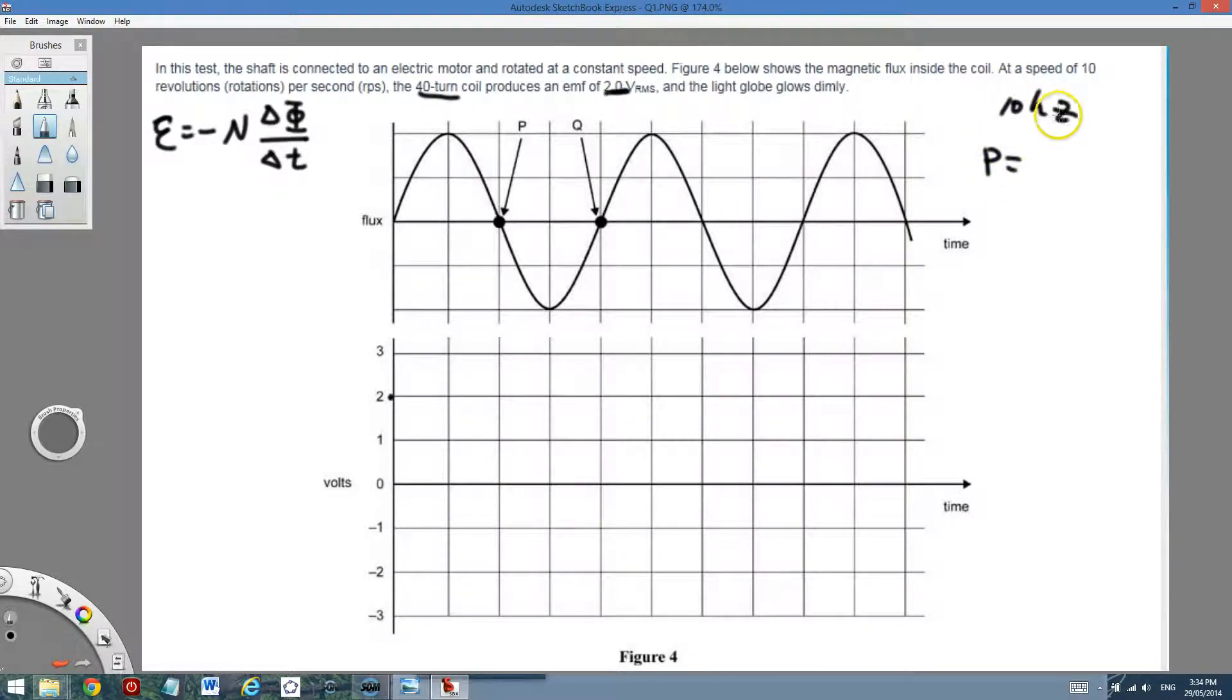So the period must be 1 on 10, 0.1 second. I need to label all this. So I need to differentiate first and put a minus in the front.